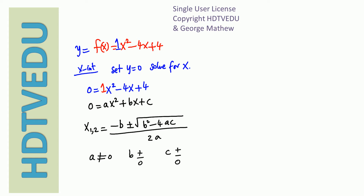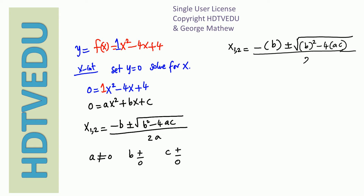A, b, and c can be positive or negative. So x₁,₂ equals negative b plus or minus square root of (b squared minus 4ac), divided by 2a. Comparing to our equation, we get a equals 1, b equals negative 4, and c equals positive 4. So substituting: negative b means negative of negative 4, which is positive 4, plus or minus...